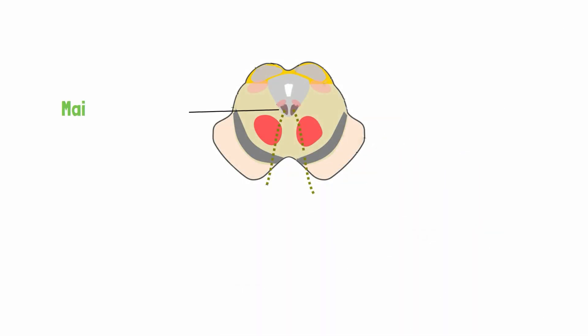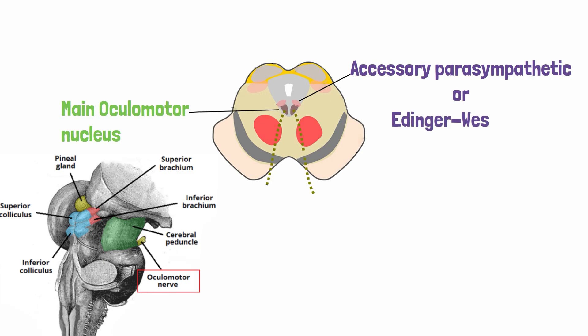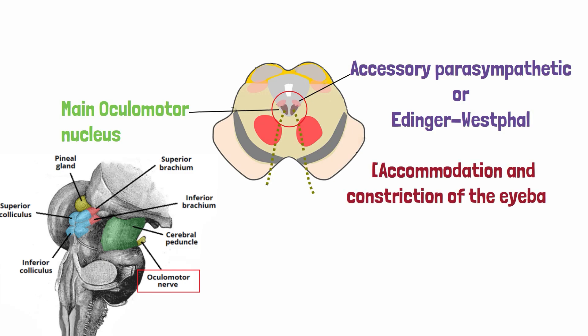The third cranial nerve has two motor nuclei. One is the main oculomotor nucleus located in the midbrain as explained earlier. Apart from the main nucleus, the oculomotor nerve contains another nucleus known as the accessory parasympathetic or the Edinger-Westphal nucleus, situated just posterior to the main oculomotor nucleus. This accessory nucleus contains nerve cells which provide control of the internal muscles of the eyes, and hence are involved in accommodation and constriction of the eyeball.